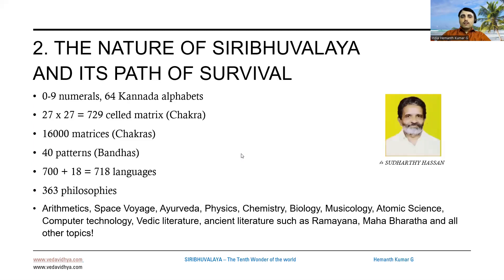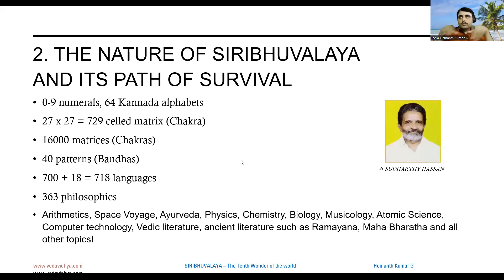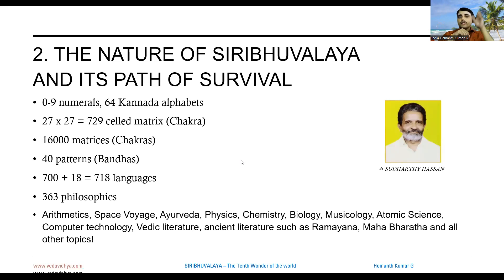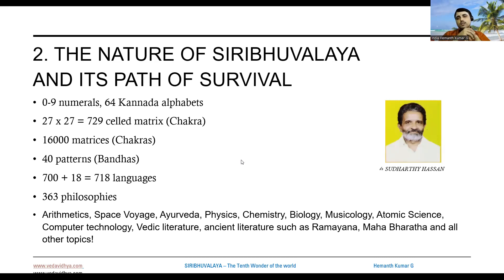So how the Sri Bhu Alaya is structured: it has something called a matrix or chakra. Each chakra is a square matrix of 27 by 27 cells — 27 vertical and 27 horizontal cells. 27 into 27 is 729 small squares. Each page has this one big chakra or matrix.